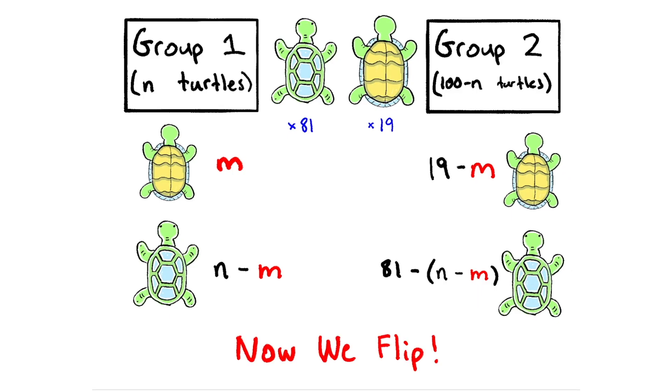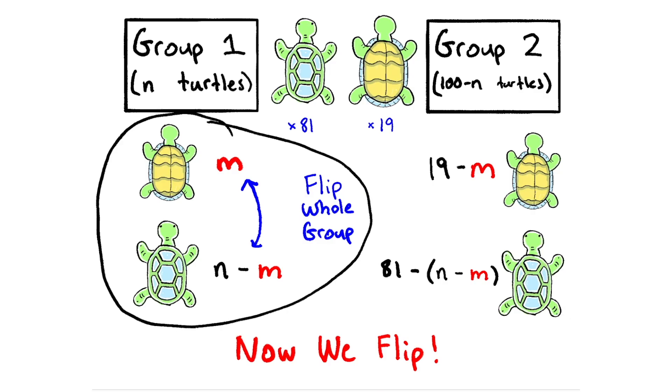Now, the only thing left for us to do is to flip. So how will flipping help us here? We're trying to find the same number of belly up turtles in both groups. And one thing we know about flipping is that if we flip an entire group, so we flip all of these turtles, that's the same as swapping the number of belly up turtles and shell up turtles in that group.